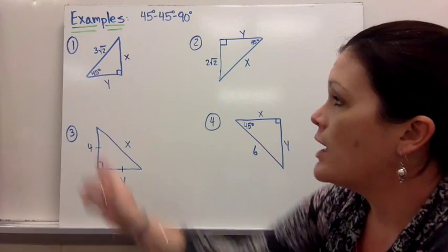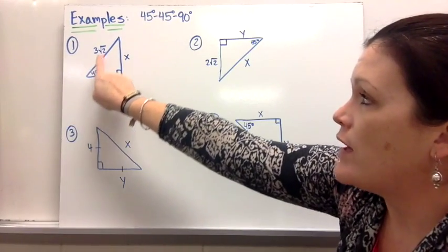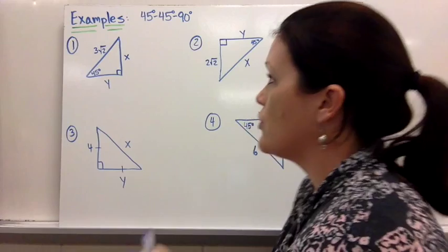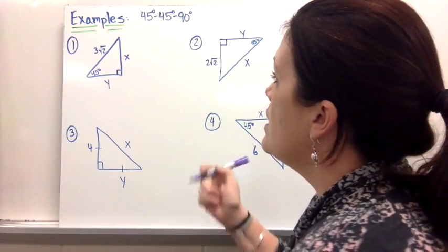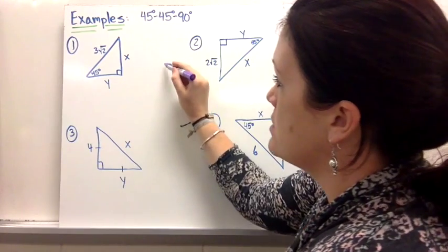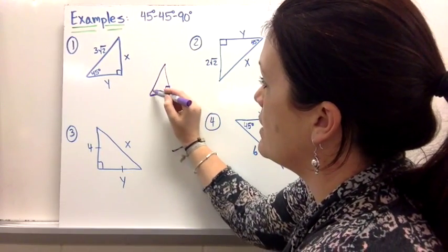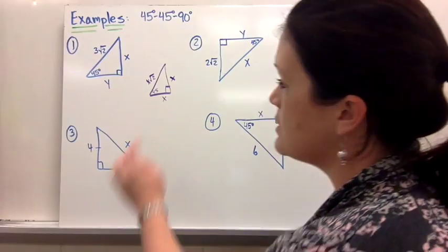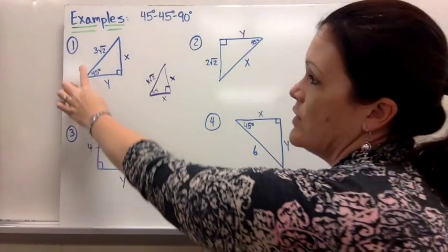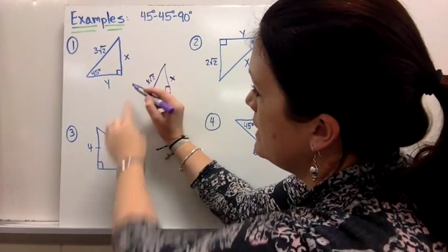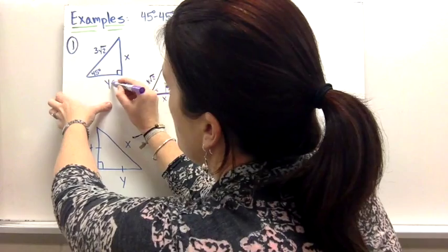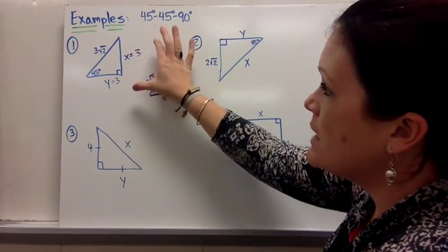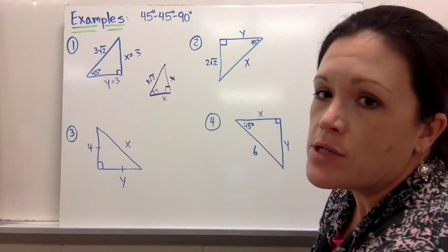For number 1, I'm given the hypotenuse. I know one angle is 45, so the other must also be 45 to add up to 180. If the hypotenuse is 3 square root 2, and the relationship for a 45-45-90 triangle is x, x, and x square root 2, then x square root 2 equals 3 square root 2, so x equals 3. That makes both y and x equal to 3.